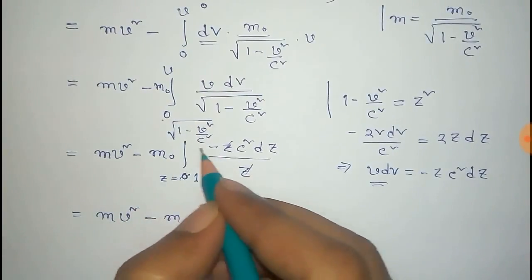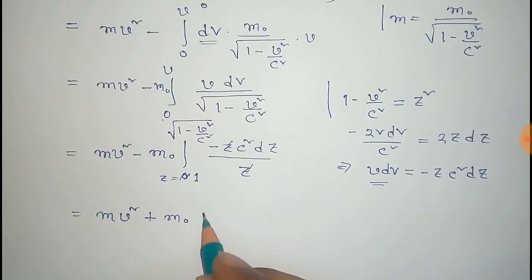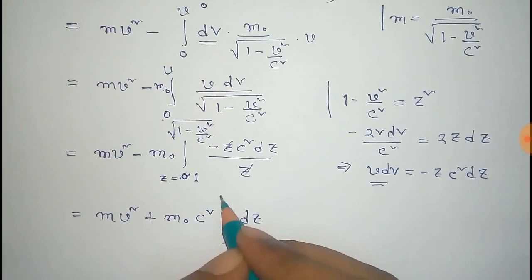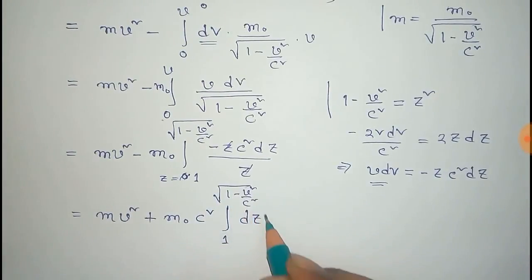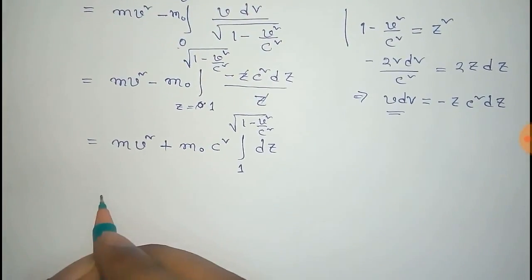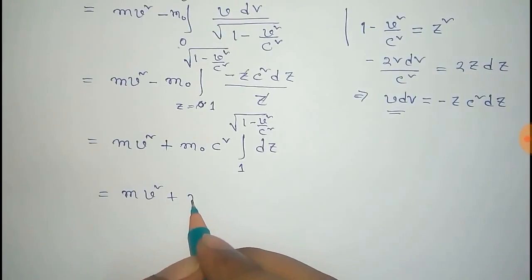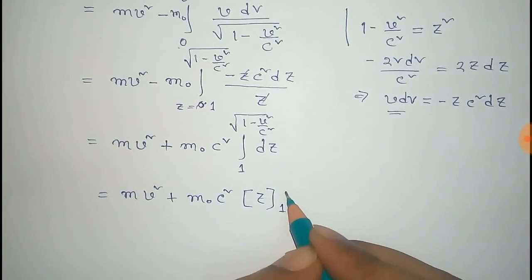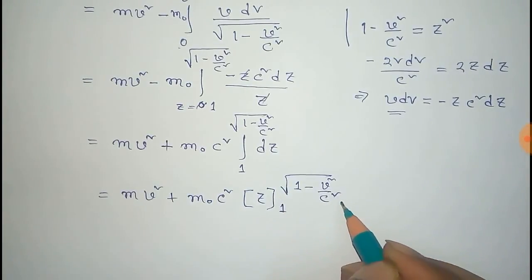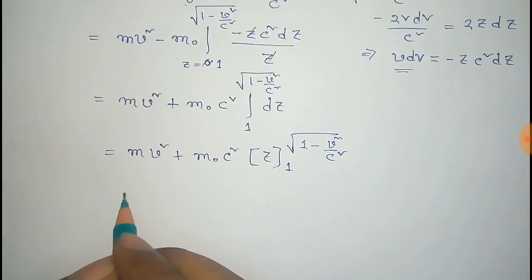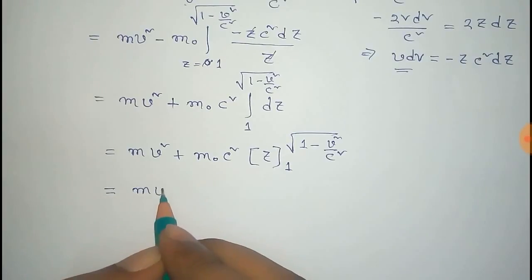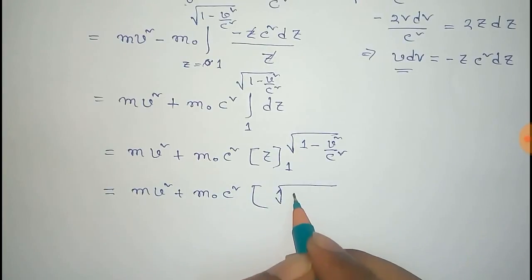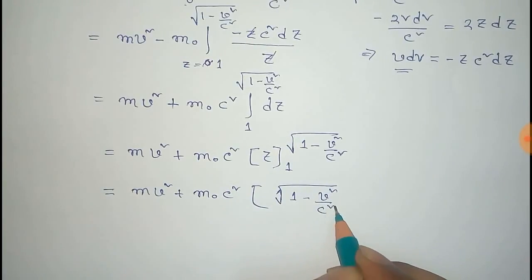The minus sign makes it positive, and c² comes out as a constant, leaving the integral of dz with limits 1 to root(1 - v²/c²). Evaluating, the integral gives z from 1 to root(1 - v²/c²), which equals root(1 - v²/c²) minus 1.